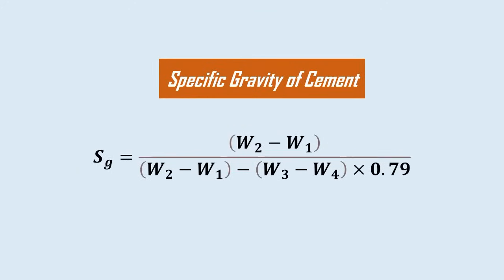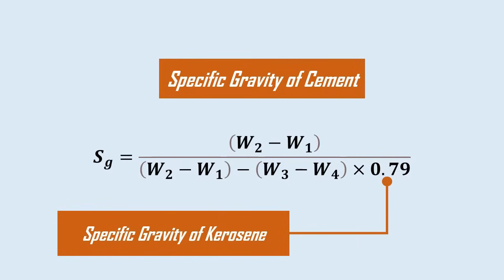Thus, the specific gravity of cement Sg is determined by the formula: Sg equals W2 minus W1 divided by W2 minus W1 minus W3 minus W4 multiplied by 0.79. Here, the value 0.79 gram per cubic centimeter denotes the specific gravity of kerosene.